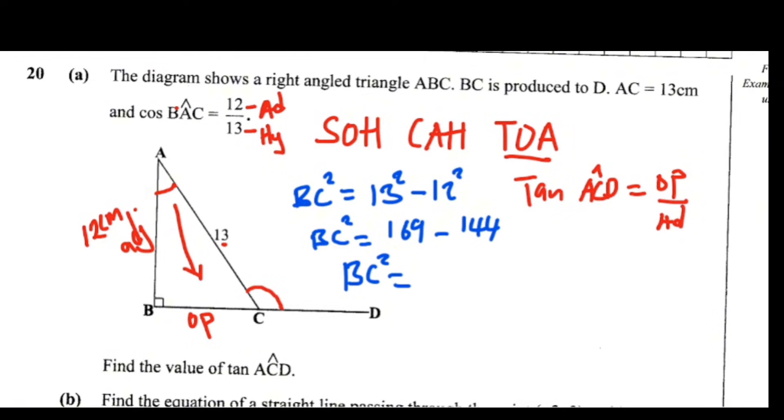So 9 minus 4 to give us 5, then 6 minus 4 to give us 2. So meaning 169 minus 144 is 25. So we are going to find BC, introduce a square root, giving this side a square root. Therefore, BC is equal to 5 centimeter.